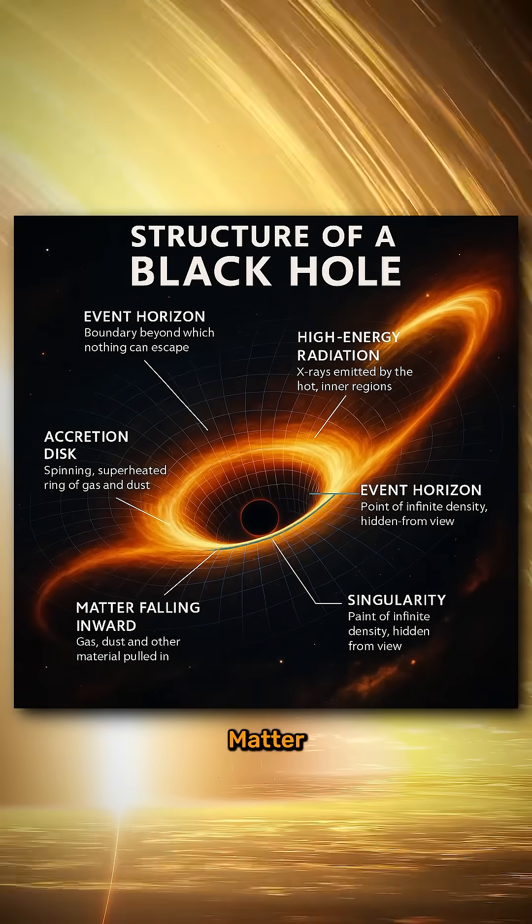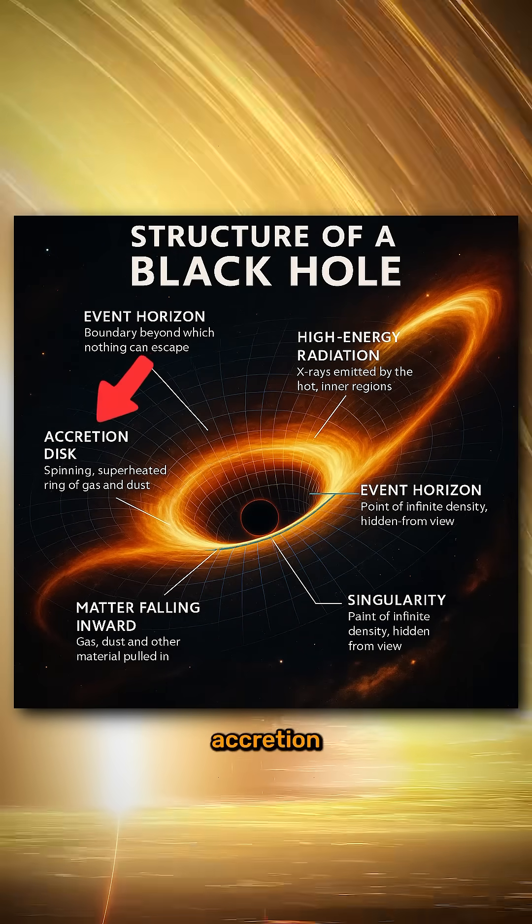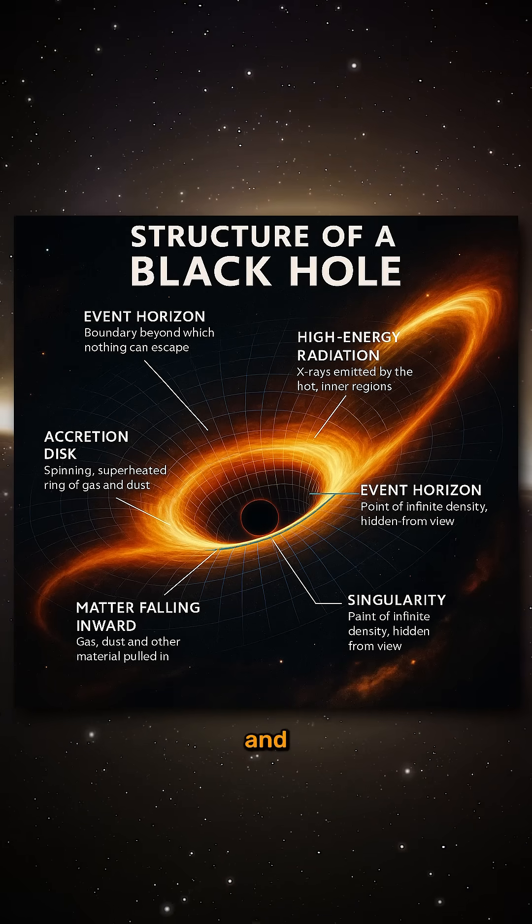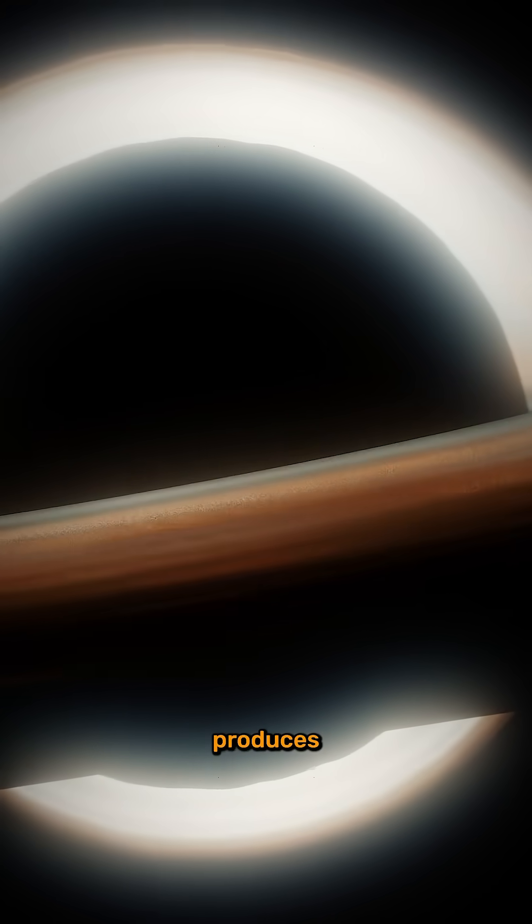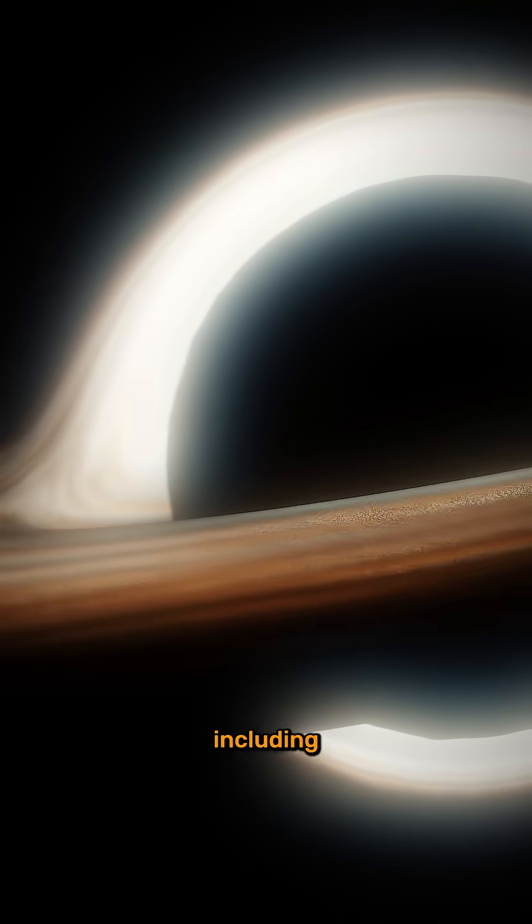Around the black hole, matter falling inward often forms an accretion disk, a superheated ring of gas and dust spiraling at nearly the speed of light. Friction in the disk produces high-energy radiation, including X-rays.